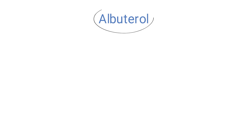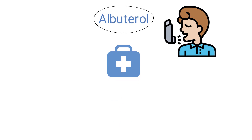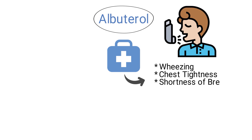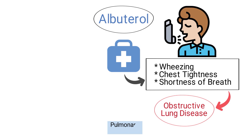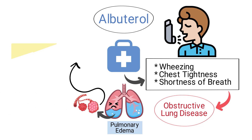Albuterol is a bronchodilator that is administered to prevent and treat wheezing, chest tightness, and shortness of breath caused by obstructive lung disease. Pulmonary edema is a condition in which fluid collects in the alveoli of the lungs and results in dyspnea and impaired gas exchange.